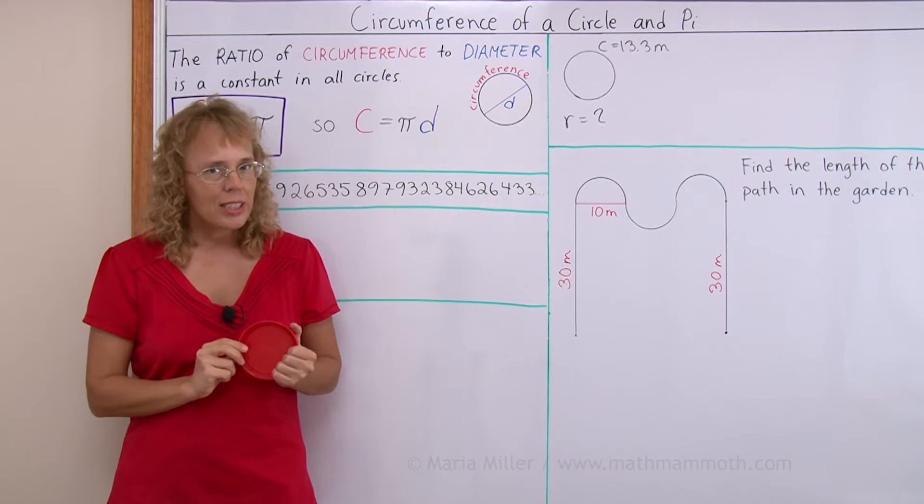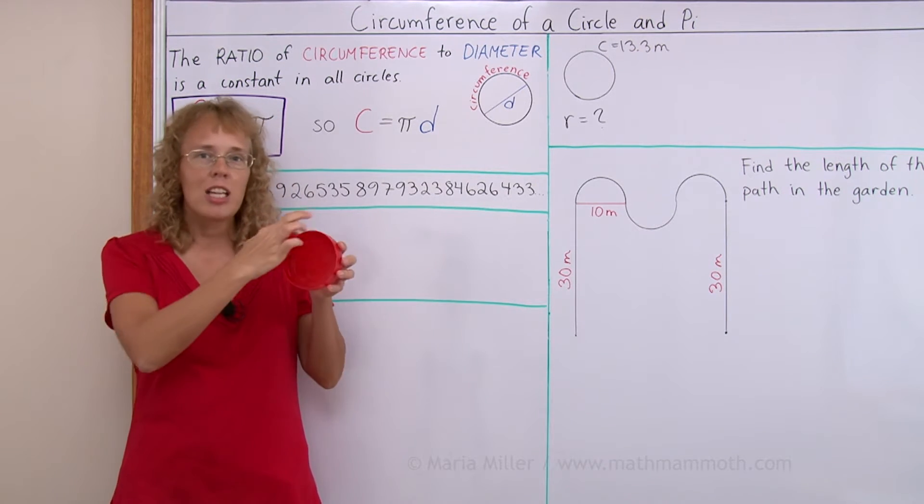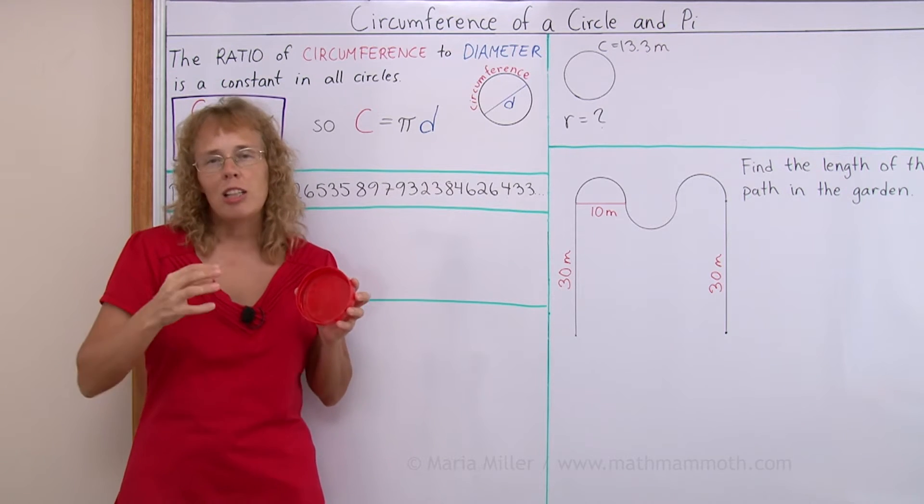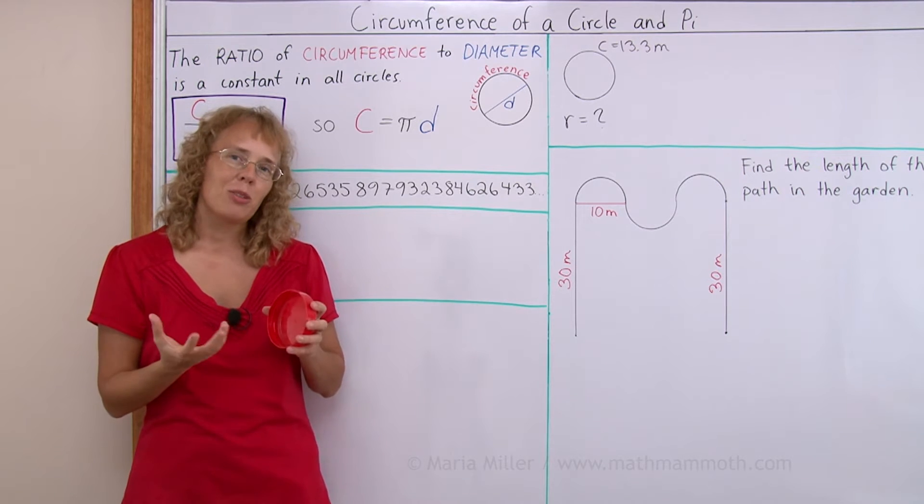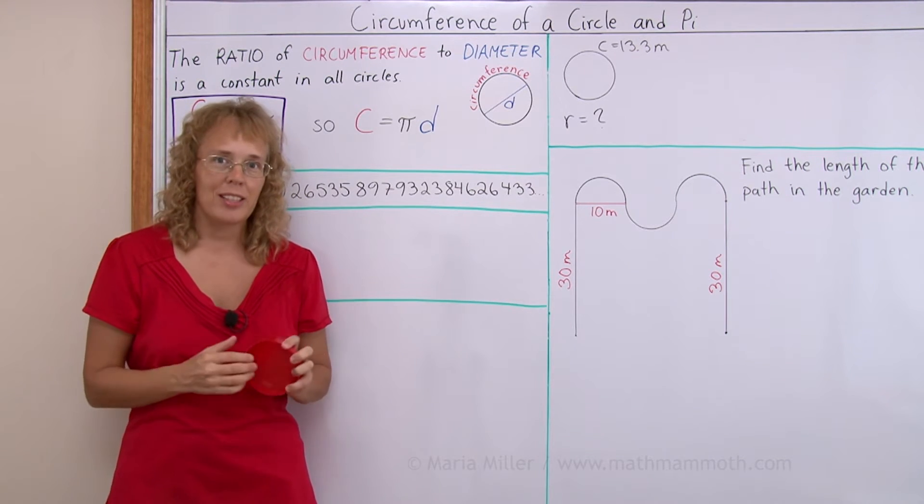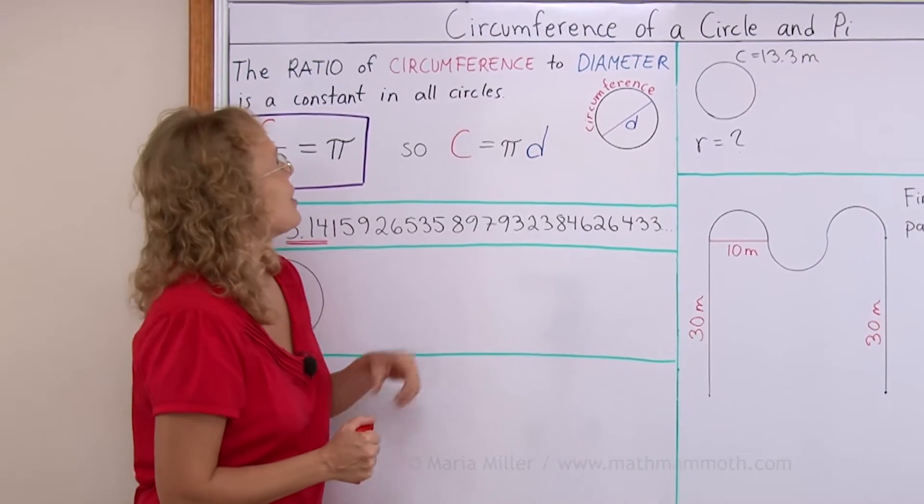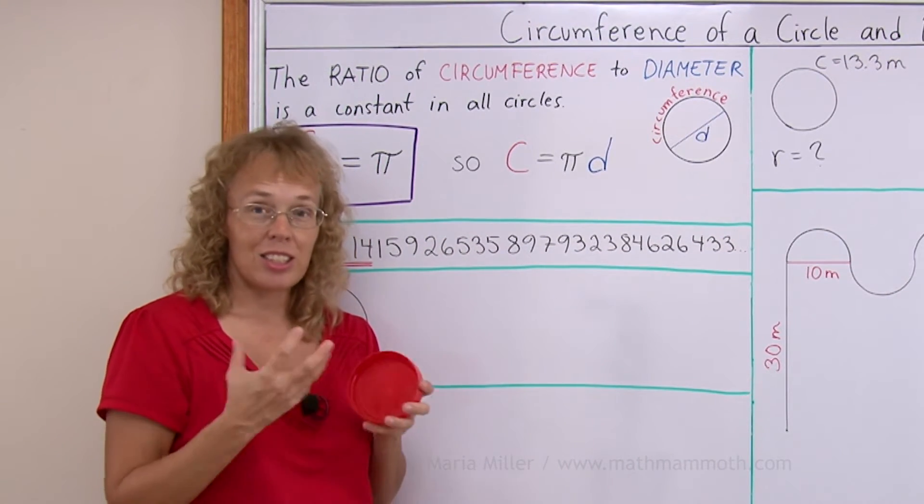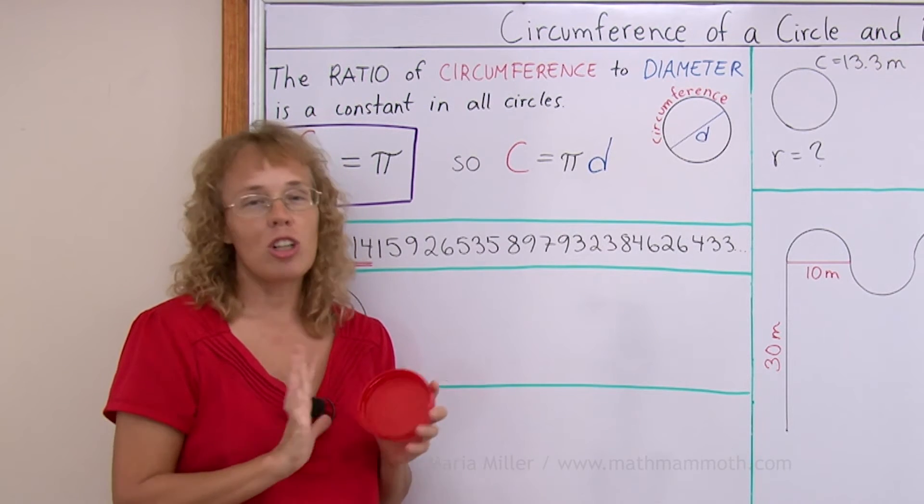You would always get a number that is close to the same. The ratio of circumference to diameter would always be a little over 3, depending on your measuring accuracy. And people from ancient times have known that. And this ratio of circumference to diameter, as the same number, is constant for all circles.